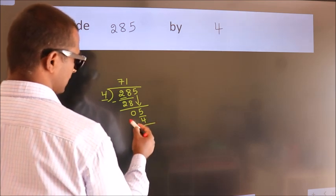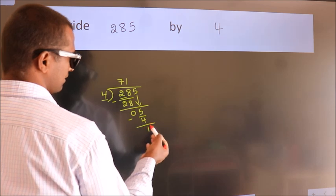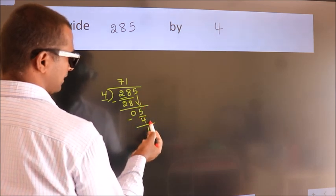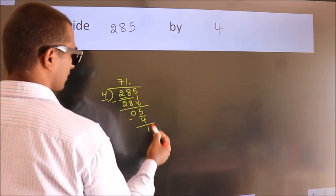Now we subtract. We get 1. After this, no more numbers to bring it down. So what we do is, we put a dot and take 0.